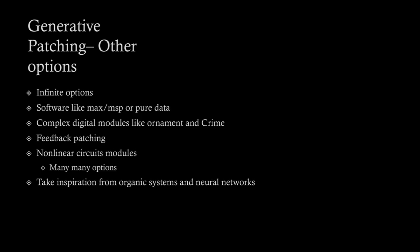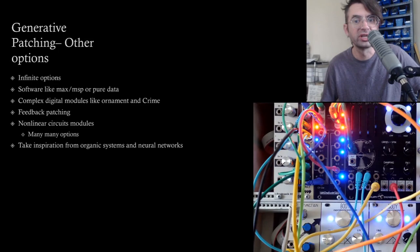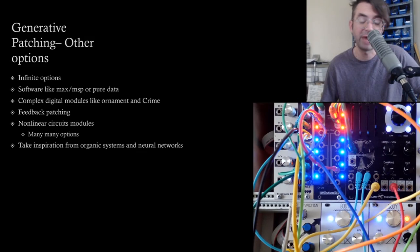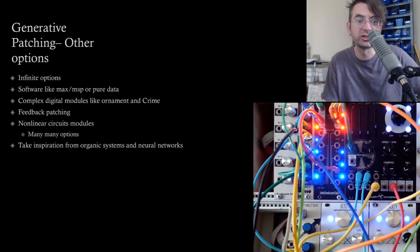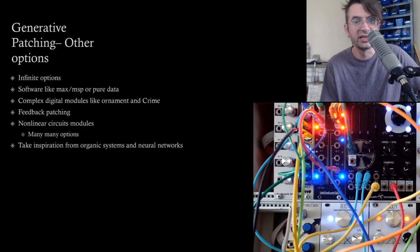There are pretty much infinite options as far as generative patching goes. Some popular strategies include software like MaxMSP or PureData — you can get really intentional about the system you're building that way. Complex digital modules like Ornament and Crime. Feedback patching — that's some of my favorite; just patch everything to everything else and you'll probably get something weird. Nonlinear Circuits specializes in this sort of thing and has lots of options, including squid axon circuits and many chaos circuits. Ian Fritz is another great inspiration for chaos circuits. And if you're trying to build your own, I would recommend taking inspiration from organic systems and neural networks. Remember to modulate the modulation. Thanks again.